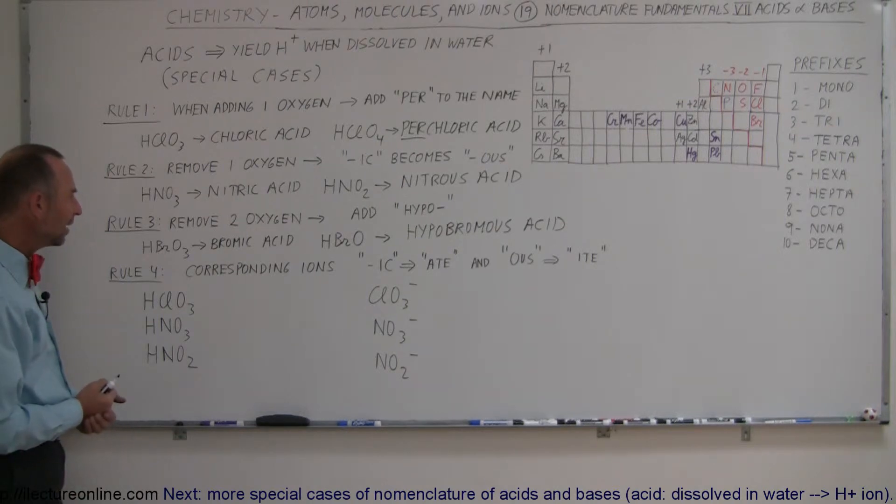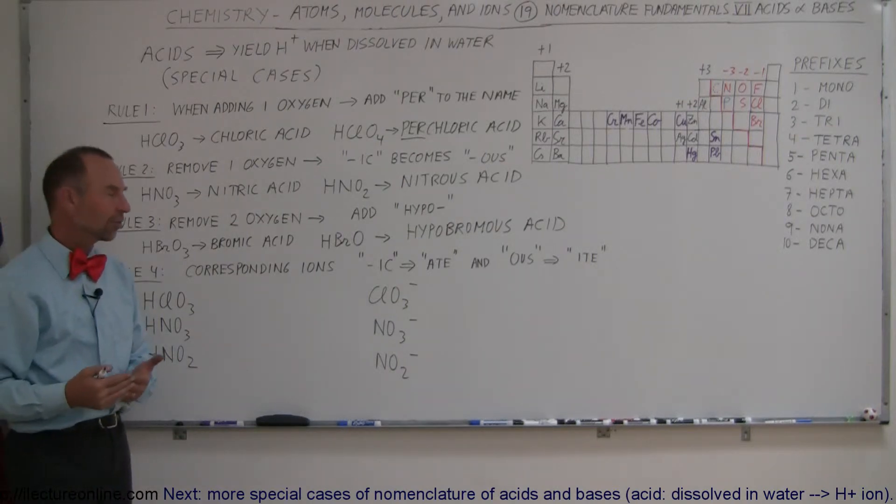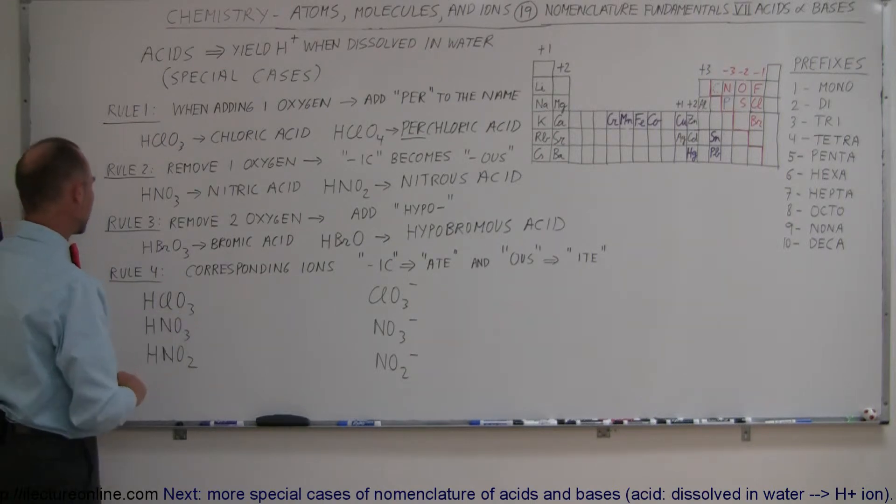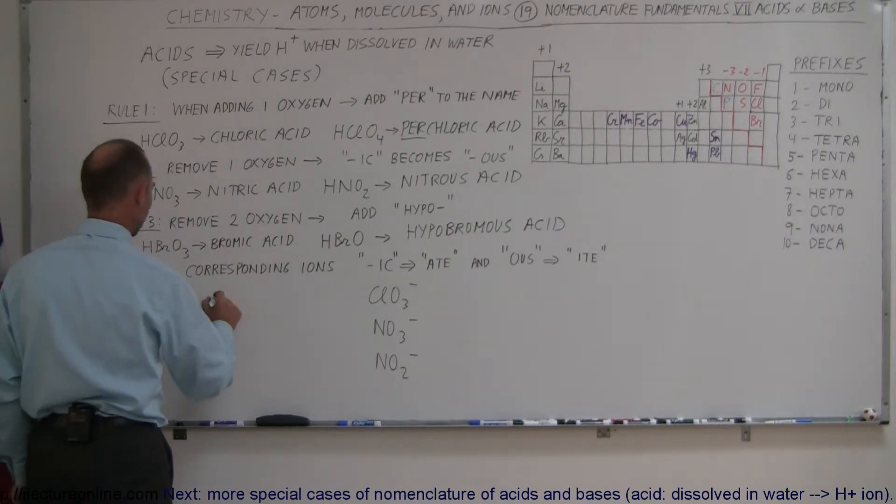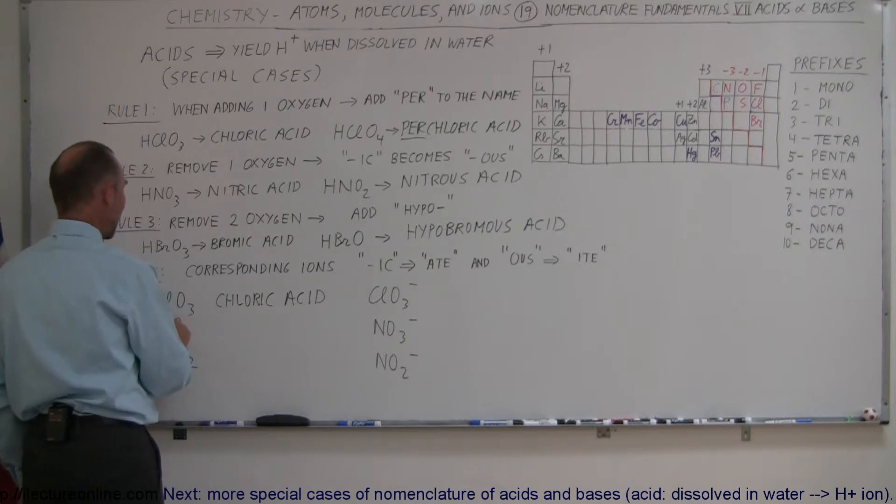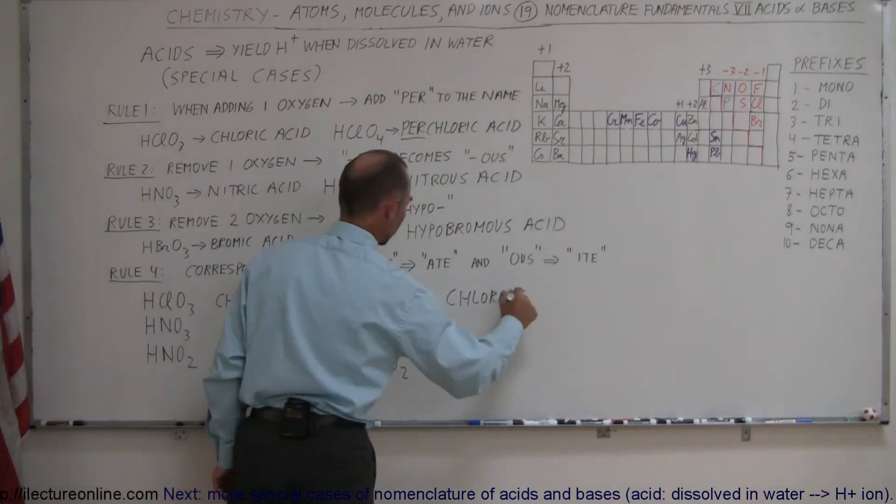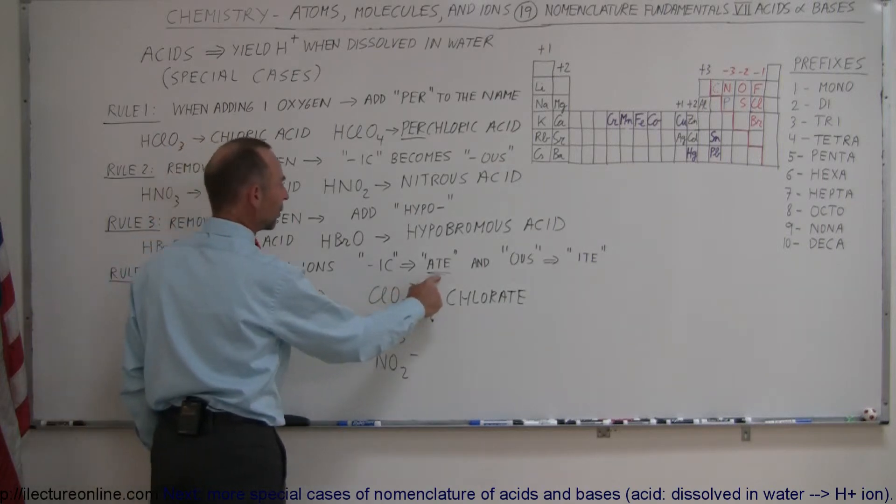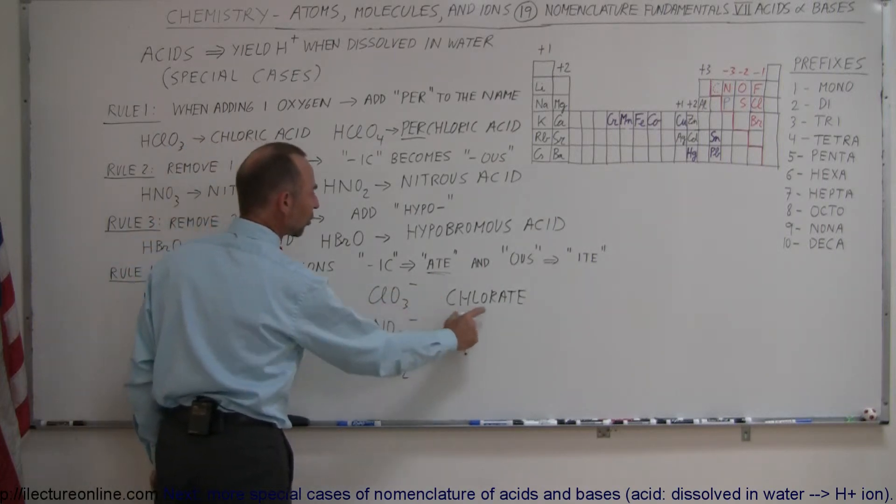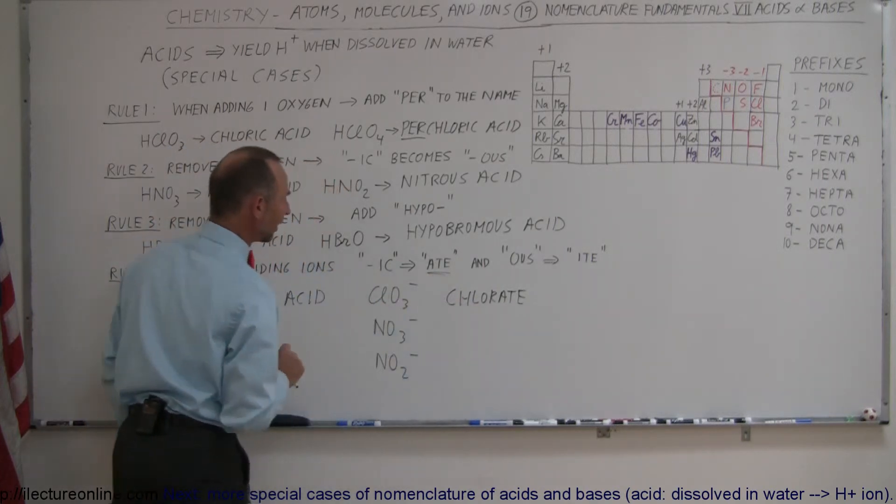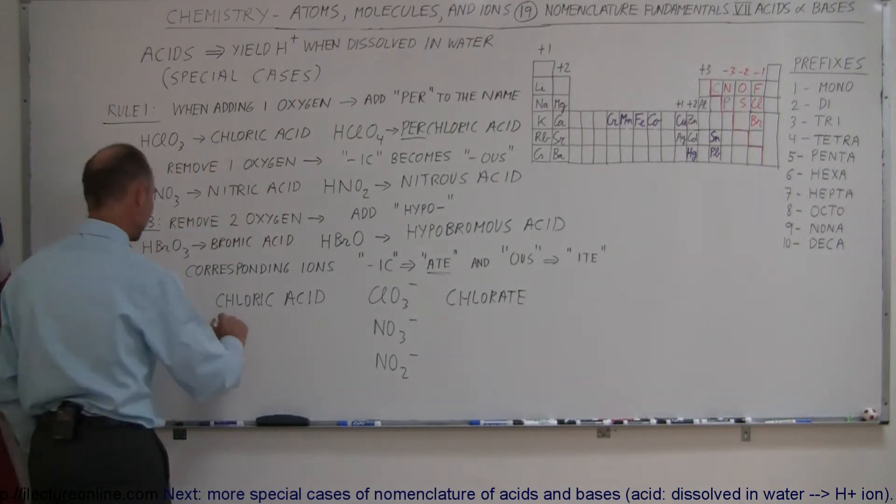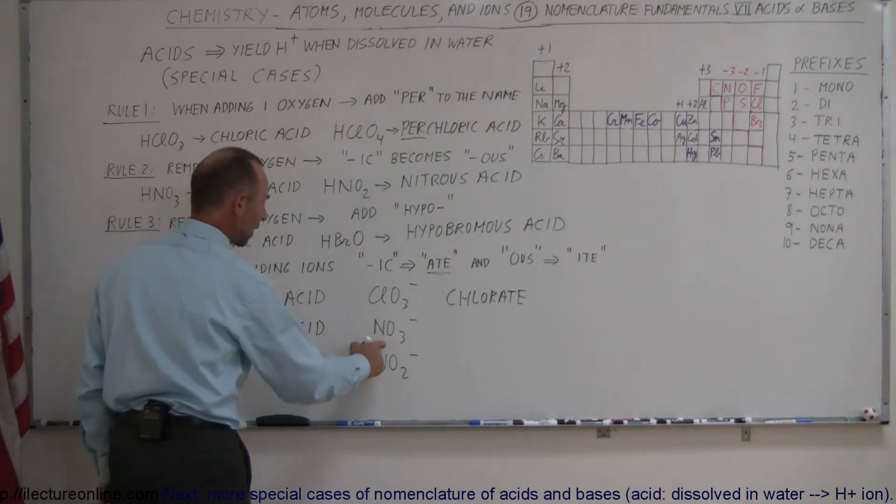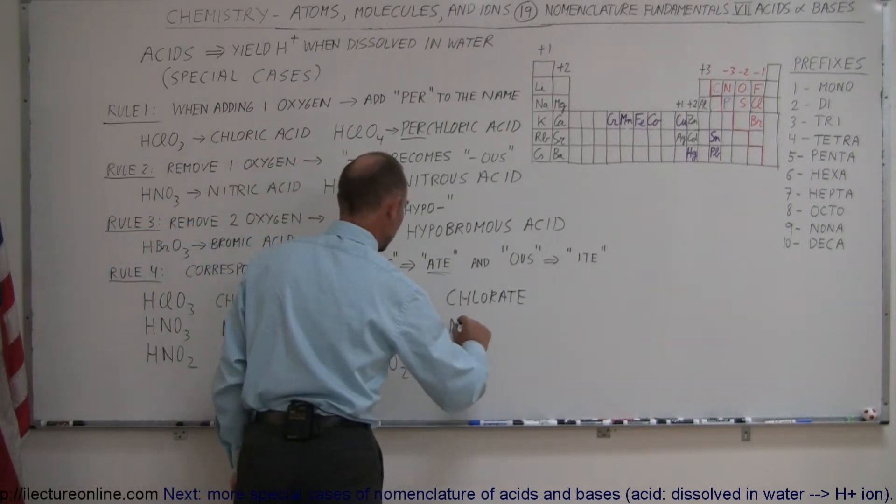Now, the last thing is the corresponding ions, the names for those. We know that if we have HClO3, which is chloric acid, we name the ion chlorate. So we have an -ic acid, chloric acid, the corresponding ion is called chlorate. We use the -ate ending. And here we have nitric acid, and you guessed it, the corresponding ion will be nitrate ion.